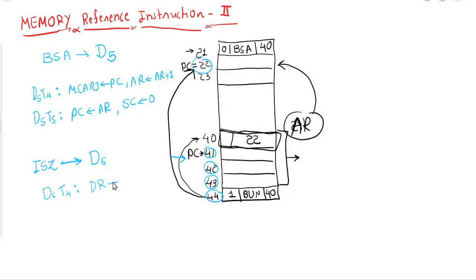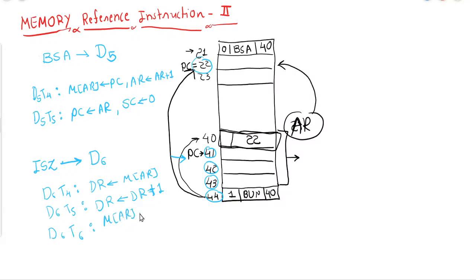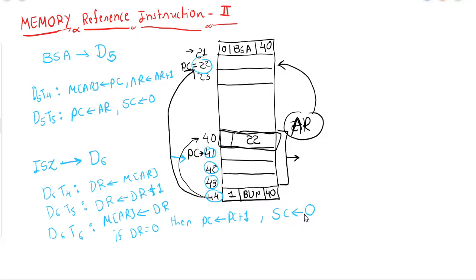Whenever a memory word is incremented and becomes zero after the increment, the program counter will be incremented. The steps are: at d6, t4 — retrieve the operand memory word into the data register: DR = M[AR]. At d6, t5 — increment the data register: DR = DR + 1. At d6, t6 — store the updated value of DR back into memory: M[AR] = DR. Then check: if DR equals zero, then PC = PC + 1, so one instruction will be skipped.